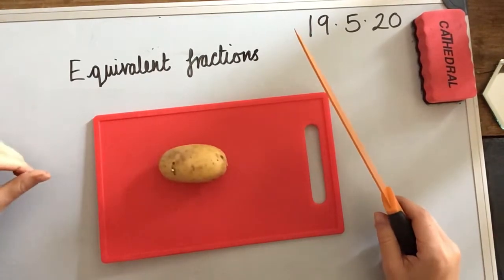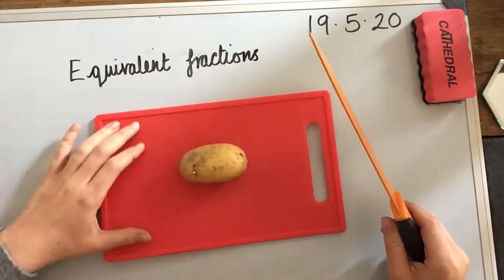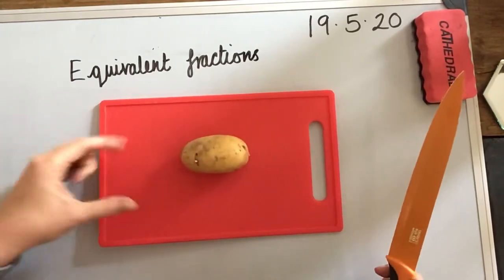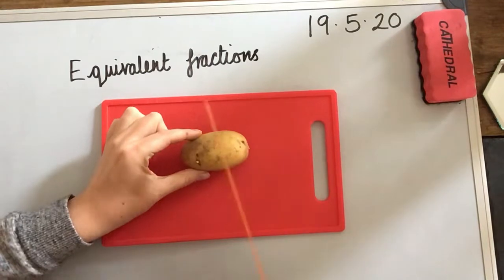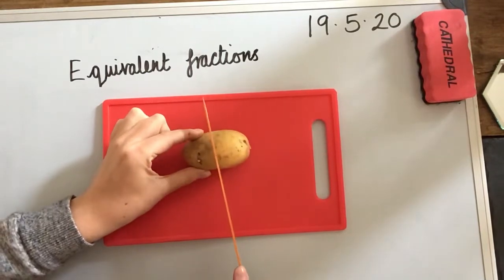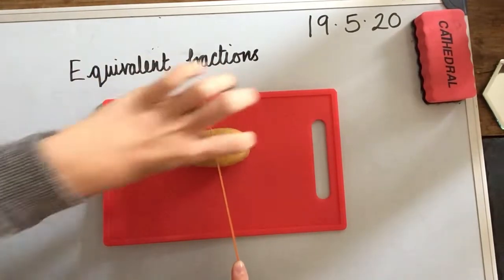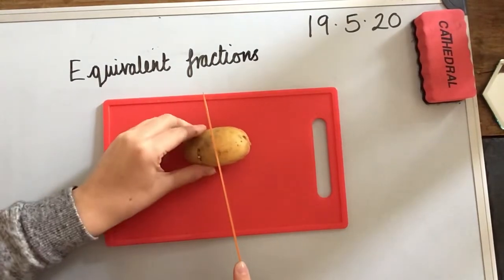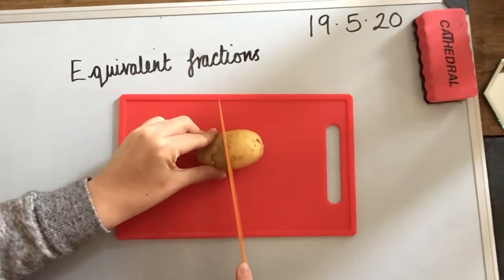So, I've got my potato here. I haven't gone bonkers — I'm not about to make my dinner. I'm just using this to show you. At the moment, I've got a whole potato. If I chop it right down the middle, what fraction would I be chopping it into? I wonder if you know. Let me chop it and we'll look at the parts.